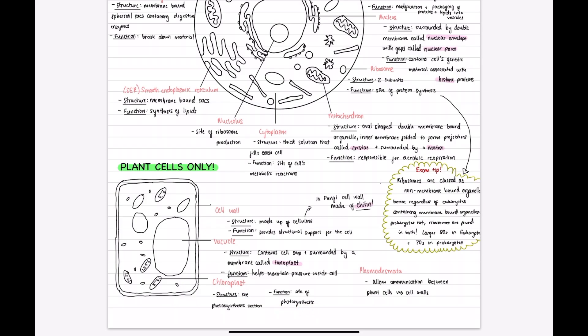Then you have the vacuole which contains the cell sap and is surrounded by a membrane called tonoplast. The vacuole is what helps maintain the pressure inside the plant cell.